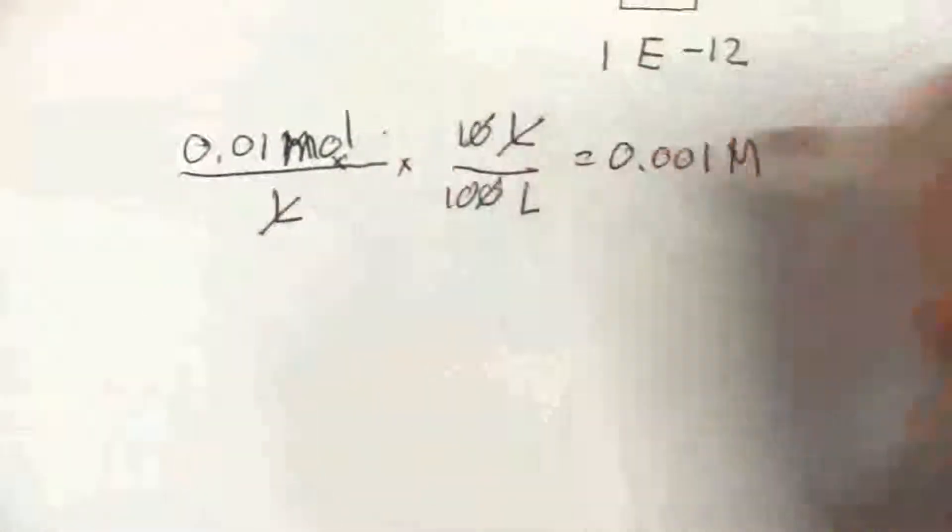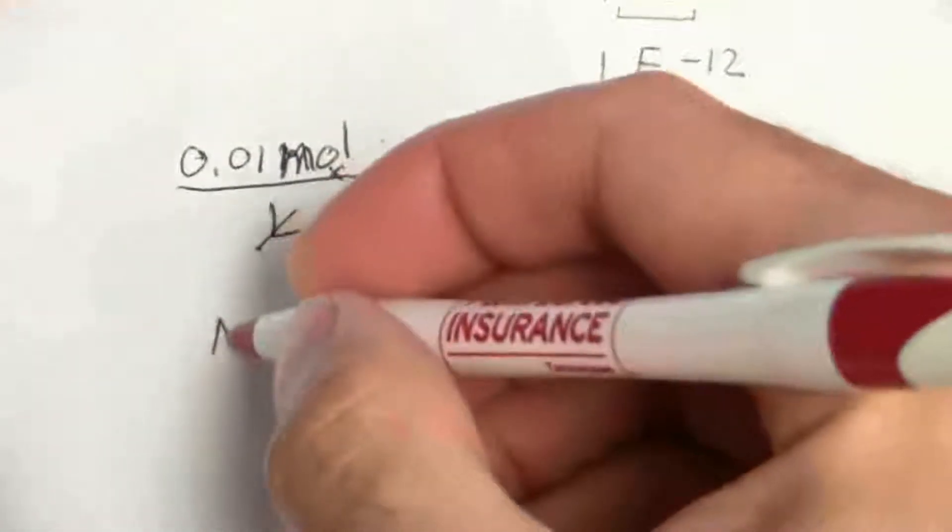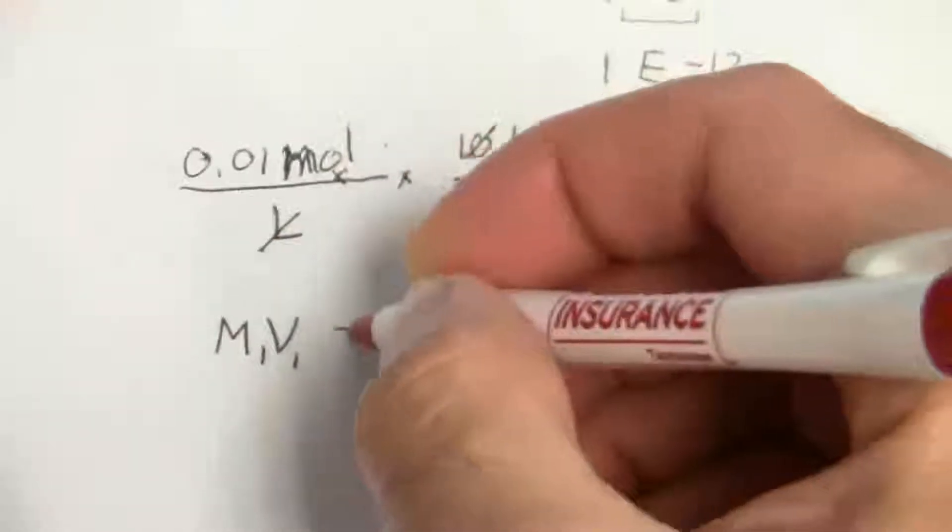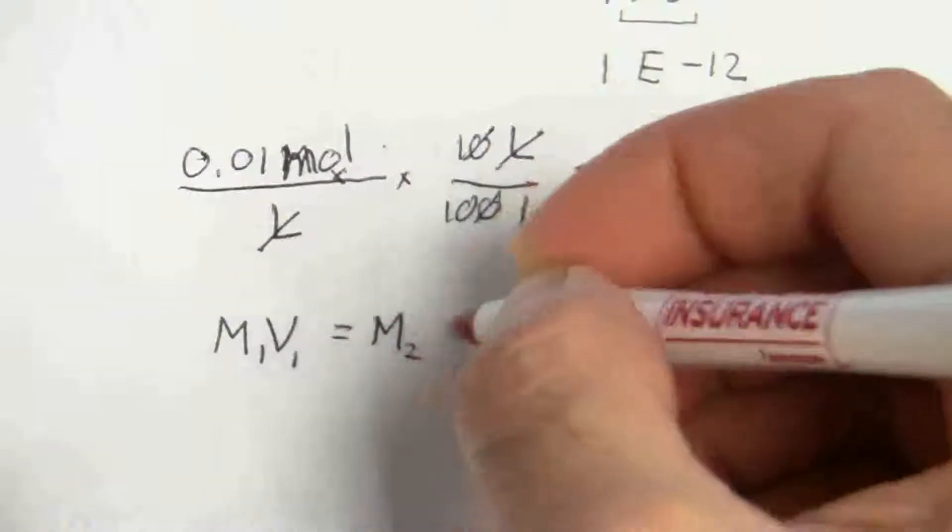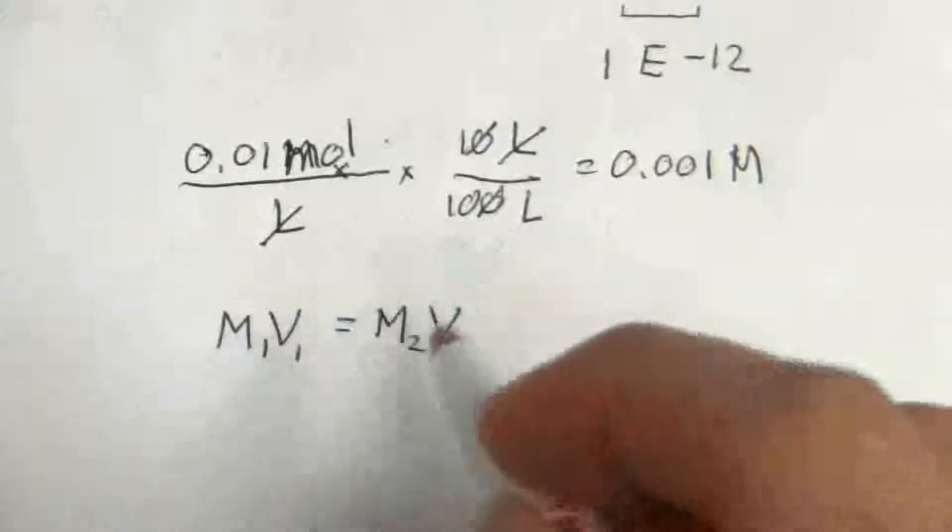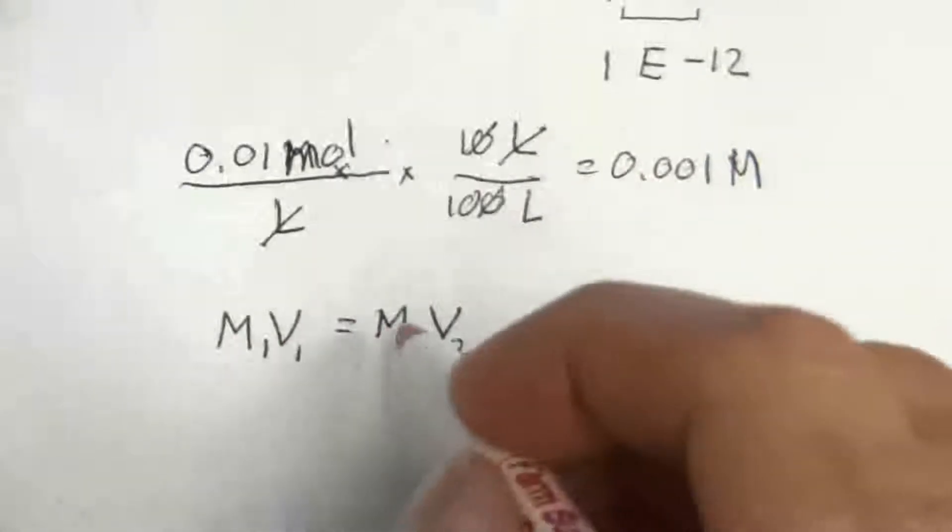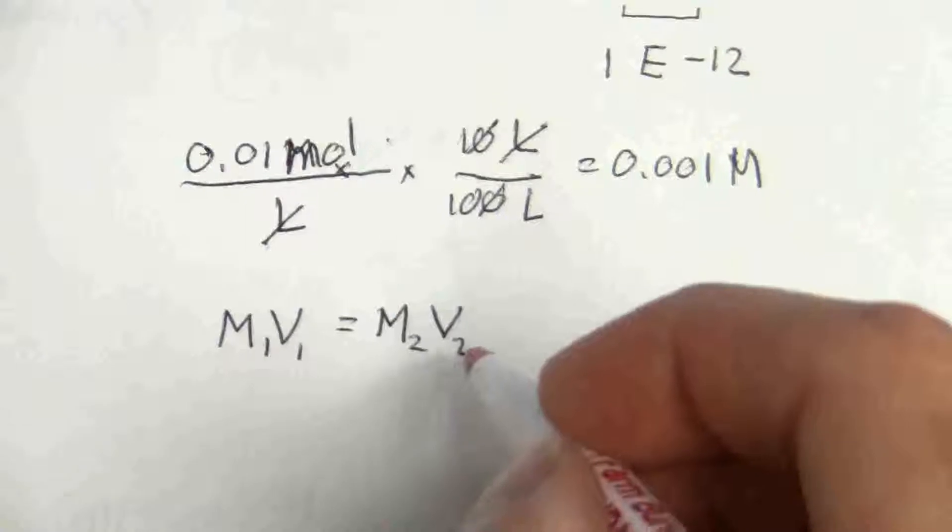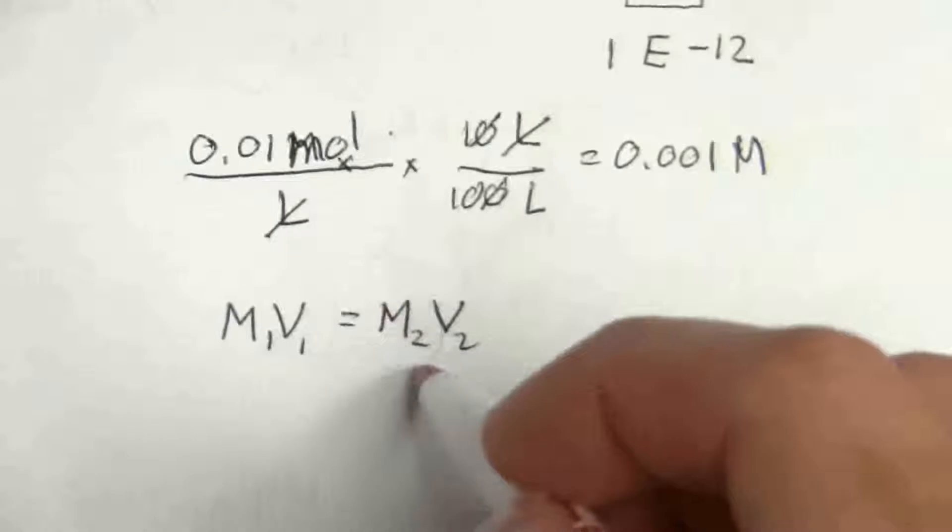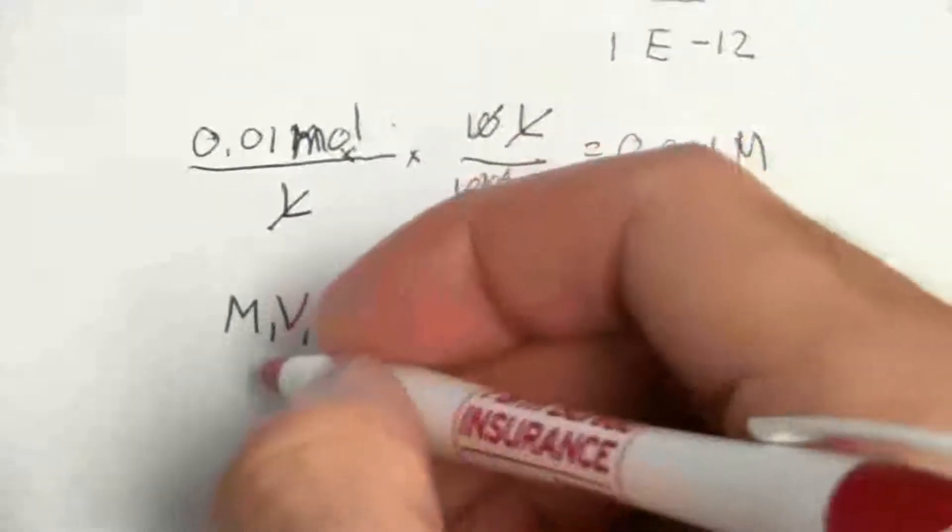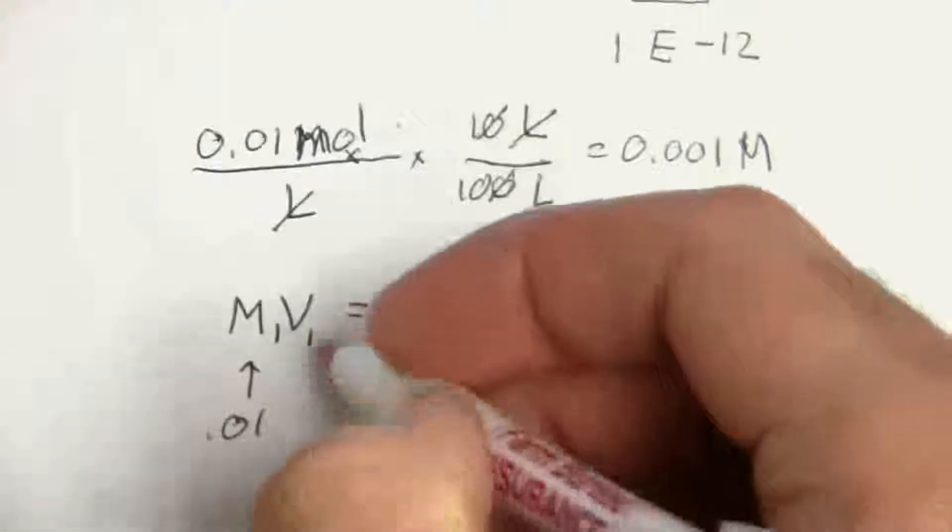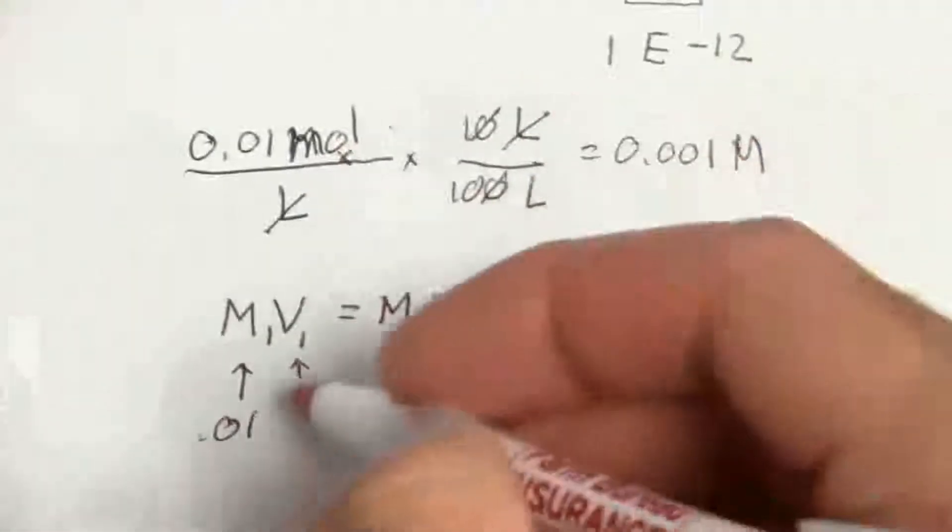Another way we can do this, you can use the formula M1 V1 equals M2 V2. Molarity, volume, and then this would be your diluted molarity and volume. So we want to know what is my diluted molarity. So I put in my initial molarity, which would be 0.01 molar, and my initial volume. How much did I take of that?